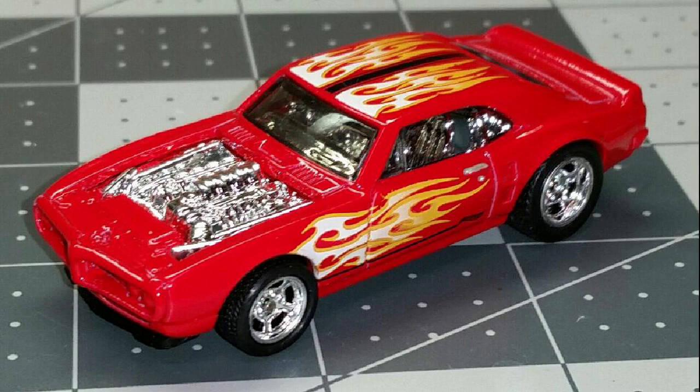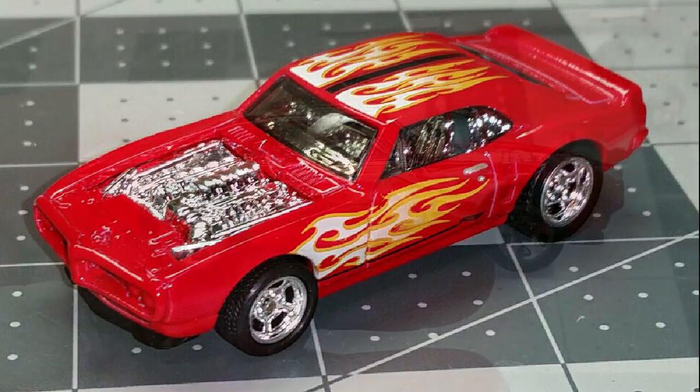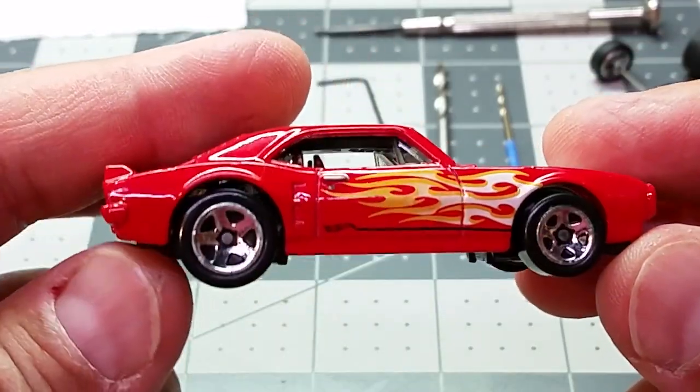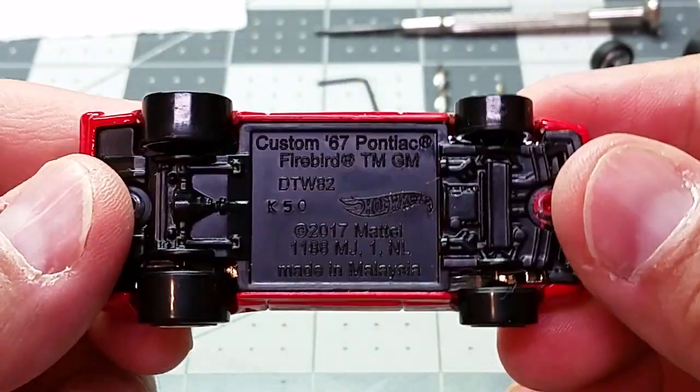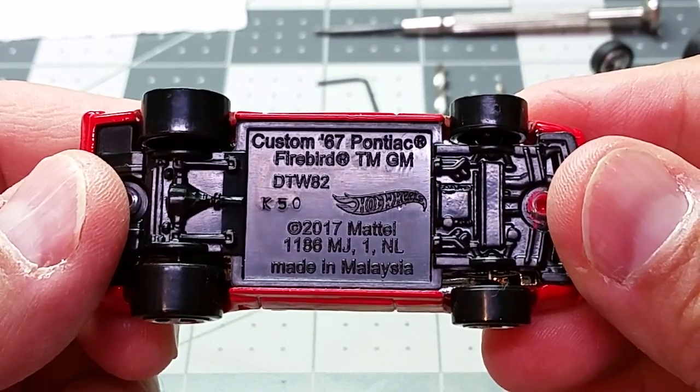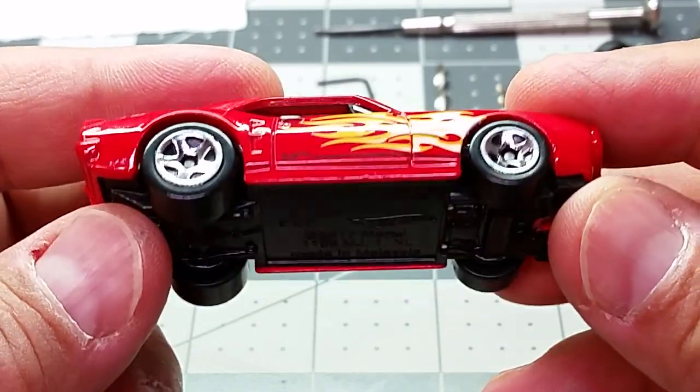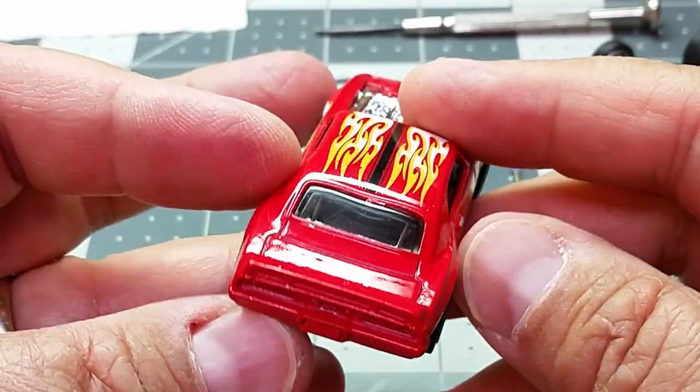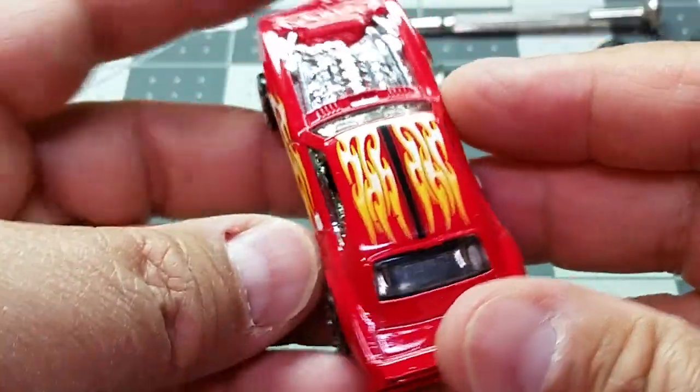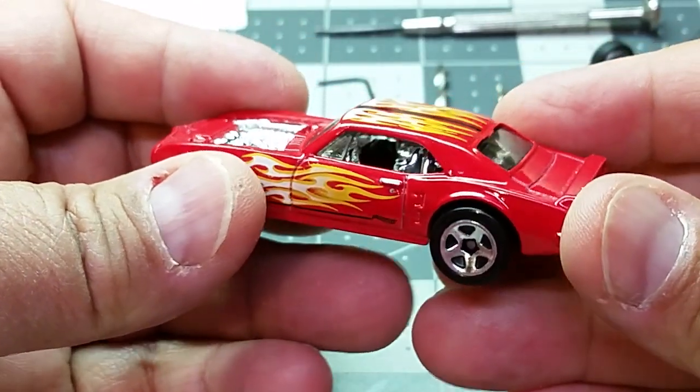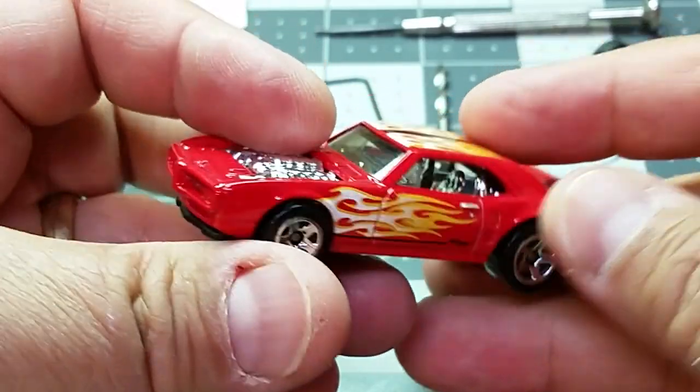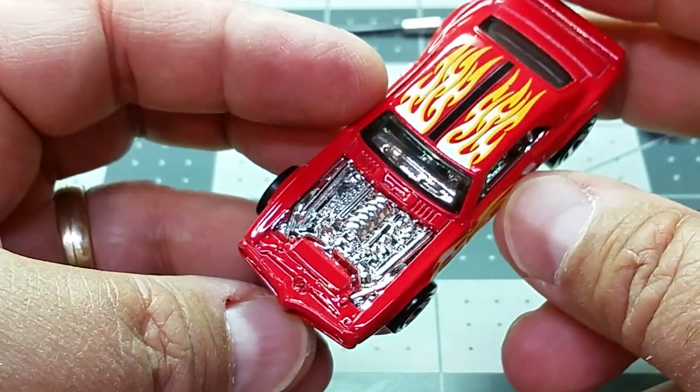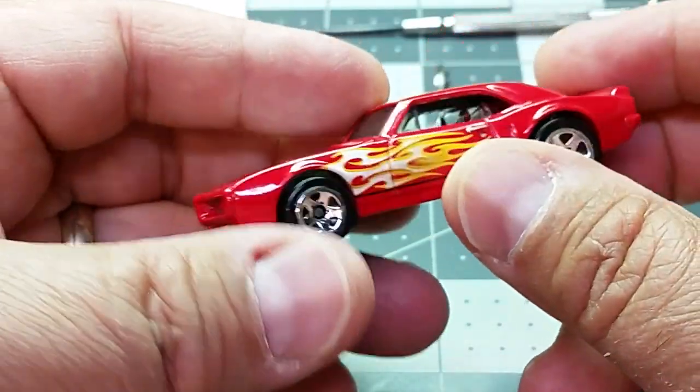In this video I'm going to show a rail rider wheel swap on a 1967 Pontiac Firebird. The standard wheels are five spoke plastic wheels and they're okay, but we want to upgrade this car and make it look a little bit better. So we'll remove the wheels and replace them with some rail riders of the same size.